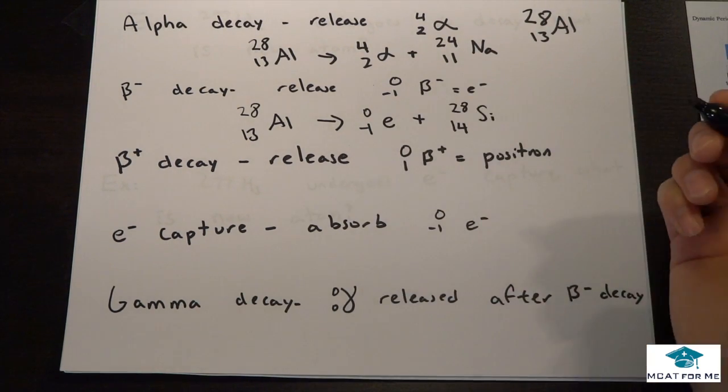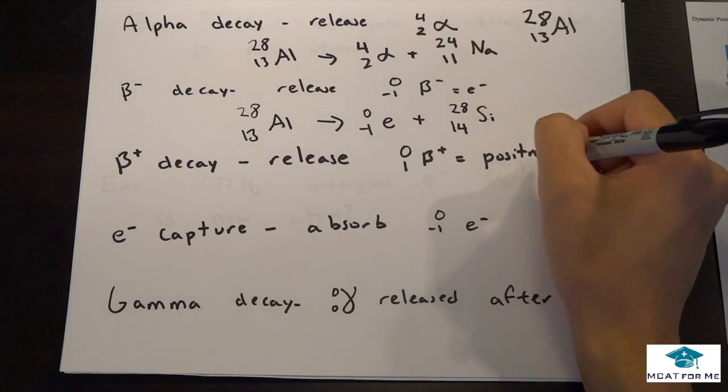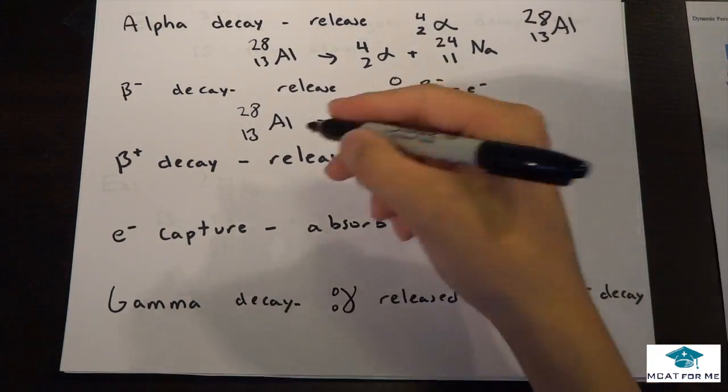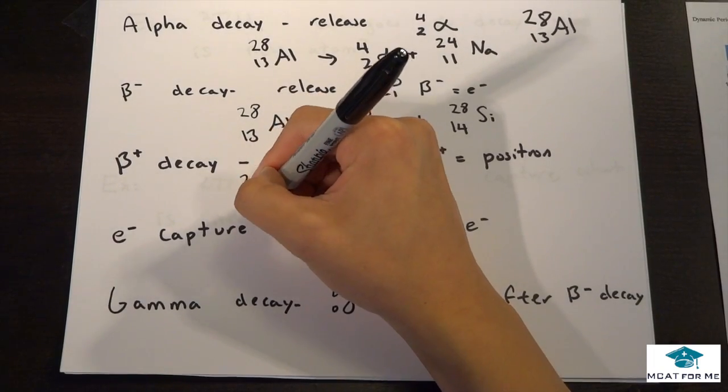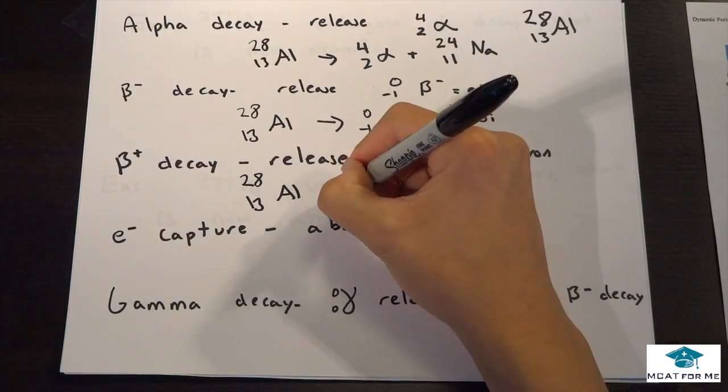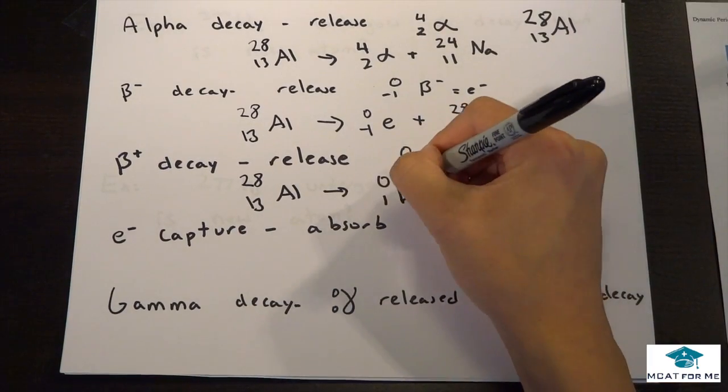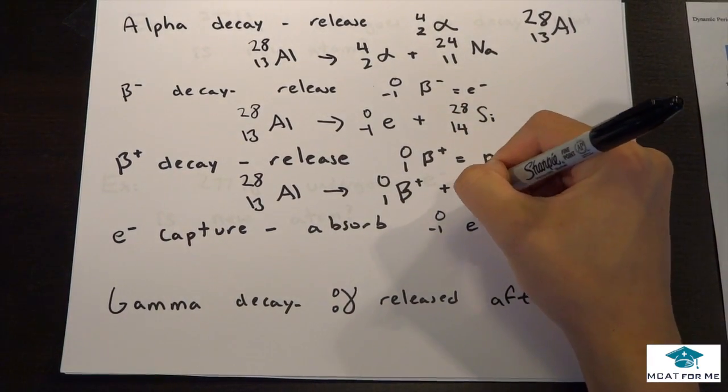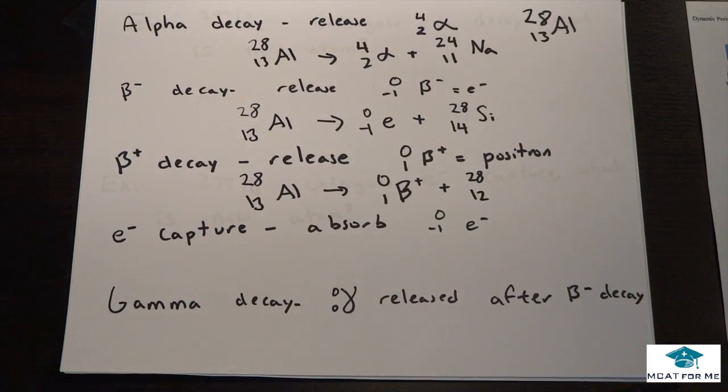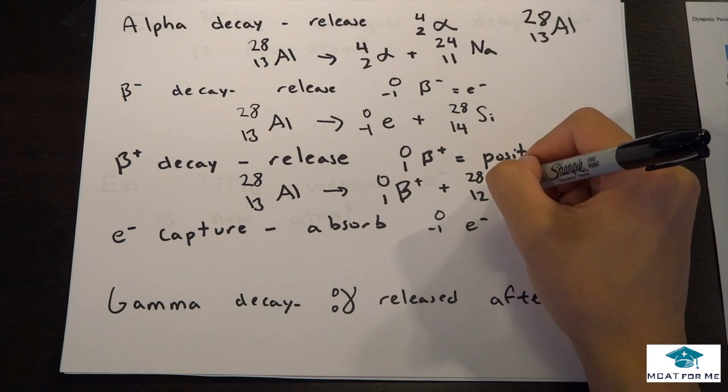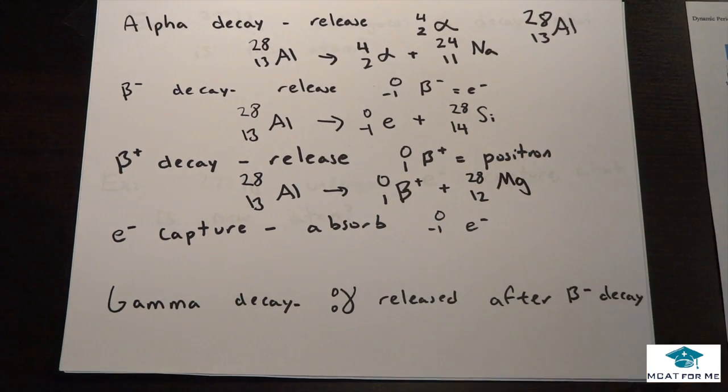So beta plus, we release 0 over plus 1, which is a positron, 1 proton, positive 1 charge, so it makes sense for it to be a positron. And let's call this B plus. And this would be 12, right? So that should make sense, 1 plus 12 is 13. So that would be magnesium.